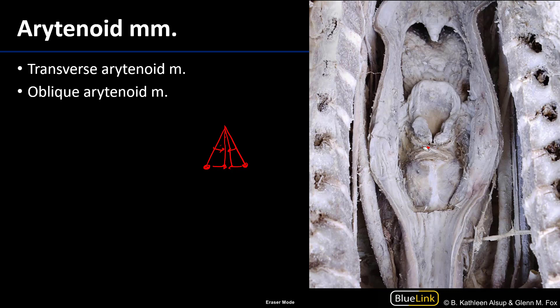There are two types of fibers for the arytenoid muscles that we call different muscles: the transverse, whose fibers run transversely, and then there are the oblique, whose fibers run obliquely. Very well named. They both work together and are both innervated by the recurrent laryngeal nerve. The oblique arytenoid muscles actually have an aryepiglottic part which runs in the aryepiglottic folds to help constrict or narrow the laryngeal inlet — to help that function more as a sphincter for air.